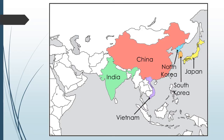The last country is Japan. It's east of North and South Korea. It's an archipelago and its nickname is the Land of the Rising Sun. Japan's capital is Tokyo.